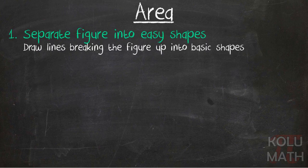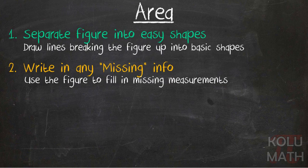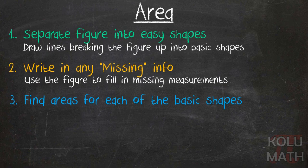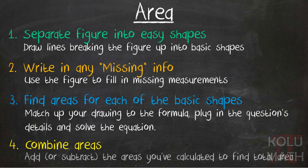The second thing we did there was write in any missing info. We used that figure to determine some missing measurements and wrote them in. The third thing we did was we found the area for each of those basic shapes, and then the last thing we did was combine those areas together. So you follow this procedure for solving irregular area problems. It won't be too bad.